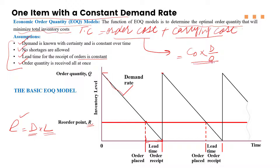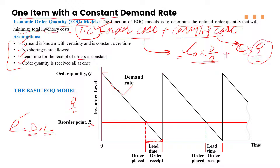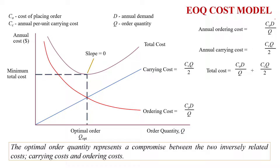To find the carrying cost, if C_C is the carrying cost per unit, we multiply it by the average inventory, which is Q/2. So carrying cost per unit times average inventory equals the total carrying cost per year. Adding ordering cost and carrying cost gives the total cost. Graphically, as order quantity increases, ordering cost decreases while carrying cost increases, and we want to find the minimum point of the total cost curve.